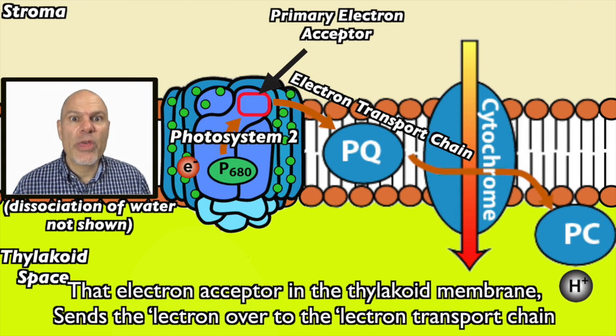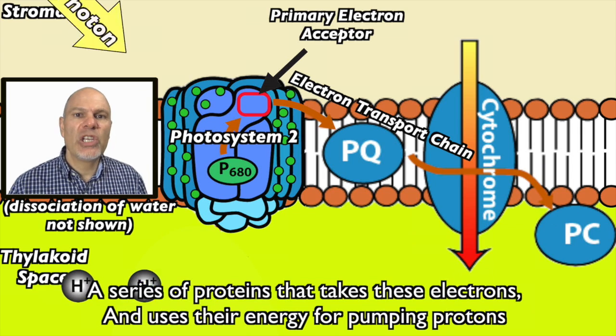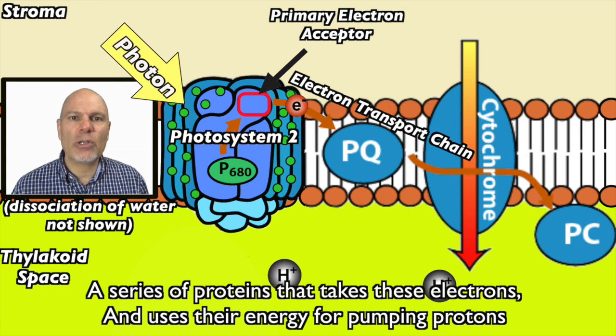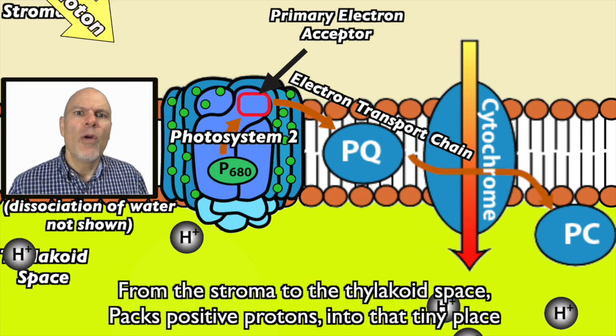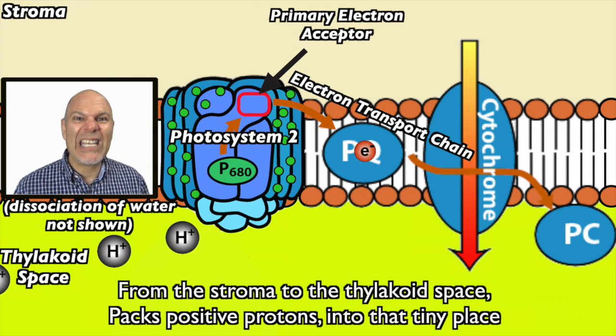That electron acceptor in the thylakoid membrane sends electron over to the electron transport chain, a series of proteins that takes these electrons and uses their energy for pumping protons. From the stroma to the thylakoid space, packs positive protons into the tiny place.